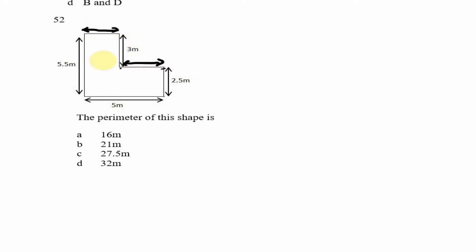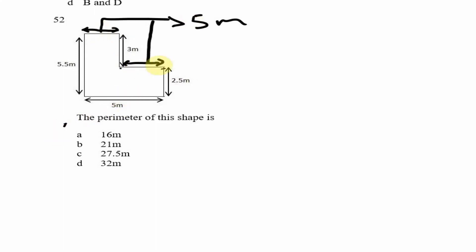Now what do we know about the sum of both these missing sides? They should add up to give us the five right here — because the length from one end to the other is equal to the two missing segments combined. So we know that both these sides add up to give us five meters. We may not find each side individually, but the sum of five meters is enough to calculate the perimeter.